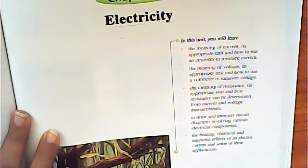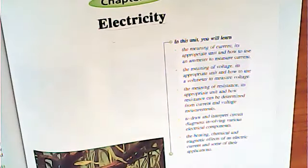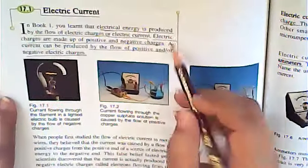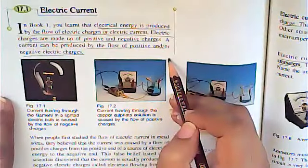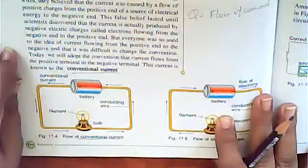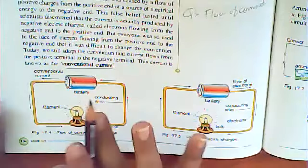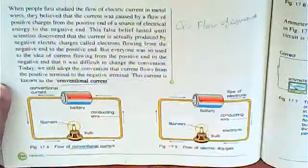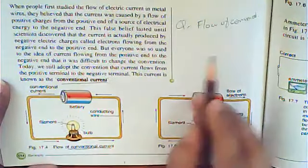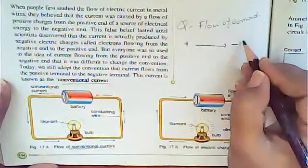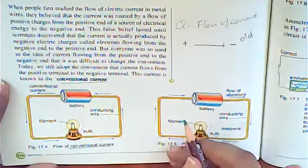I'm going to explain how the diagram section will be conducted. I have marked the important definitions in the previous lecture. Now look here — this is conventional current. According to the previous concept, what was the old concept? The old concept was that current flows from positive terminal to negative terminal.